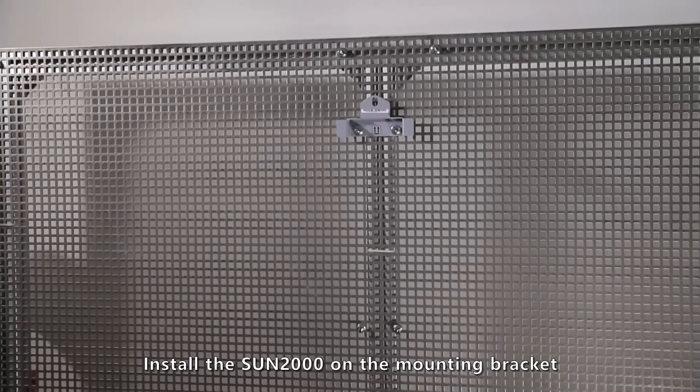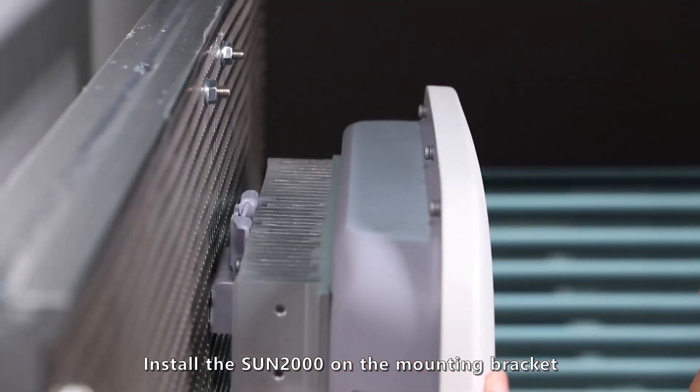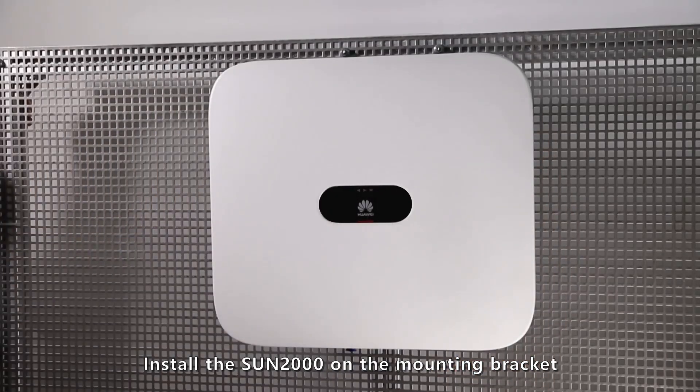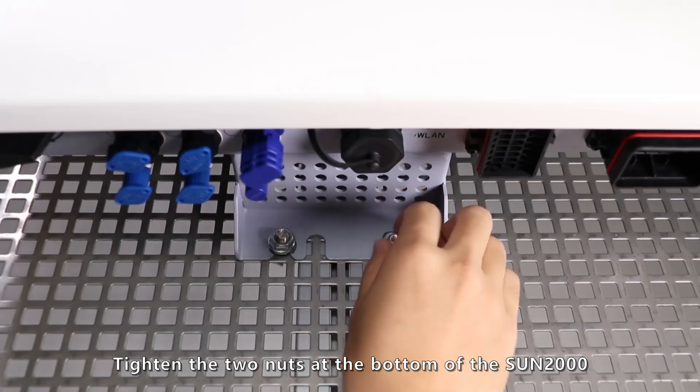Install the Sun 2000 on the mounting bracket. Tighten the two nuts at the bottom of the Sun 2000.